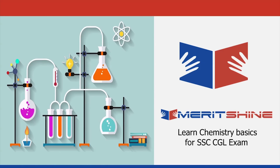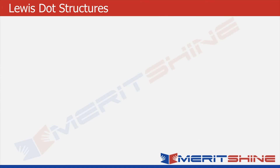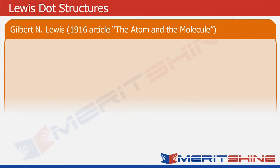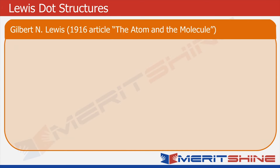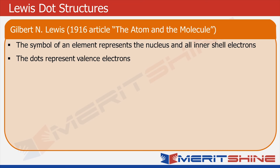Hello everyone. In this video, we will discuss chemical bonding. Let us now move forward to Lewis dot structures. Scientists named Gilbert and Lewis suggested the Lewis dot structure. It helps us to visualize the chemical bonding and chemical reactions. Let us look at the Lewis dot structures for a few elements.